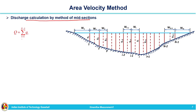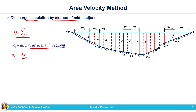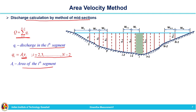Total discharge is calculated as Q = Σ qi, where i goes from 1 to n-1. qi is the discharge through each segment. For the ith segment, qi = ai × vi, where ai is the area and vi is the velocity measured within the ith segment. This formula applies for i varying from 2 to n-2. The first segment (i=1) and last segment (i=n-1) are triangular in shape.